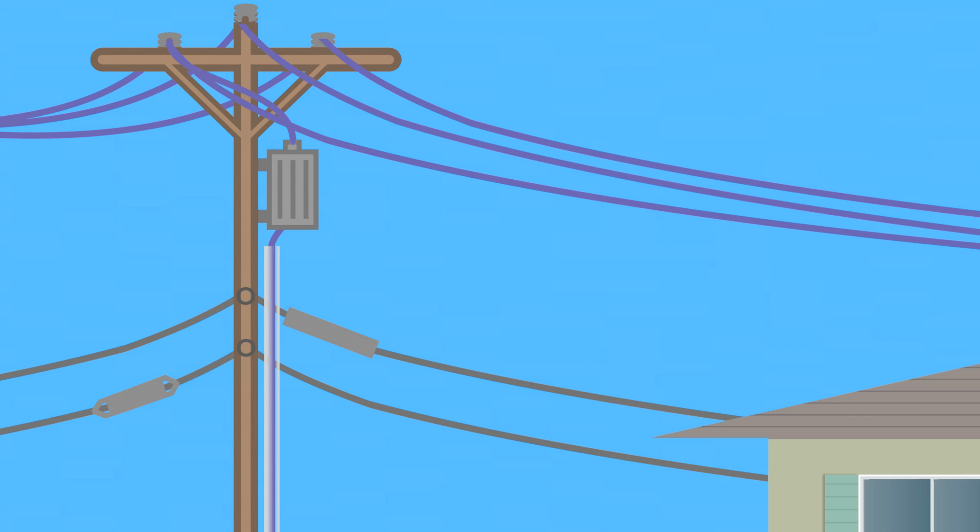When the distribution lines are located overhead, you'll sometimes see other equipment, like telephone, internet, and TV cables attached to the power poles.